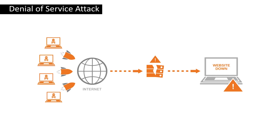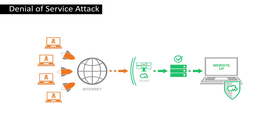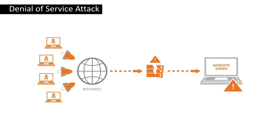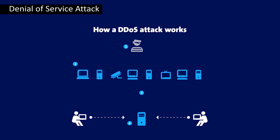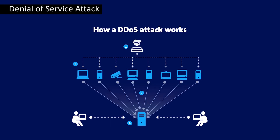Next is the denial of service attack. Slowing down or crashing the system to render it slow or unusable is called the denial of service attack. This involves corruption or deletion of data or information and disabling of the network system by declining the services to the known or legitimate users.